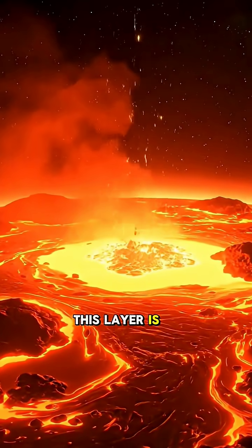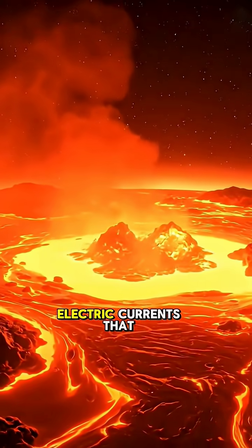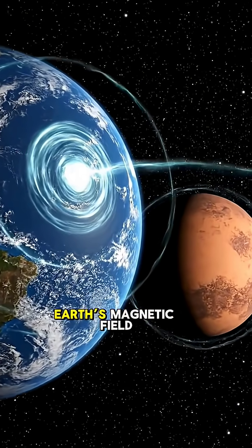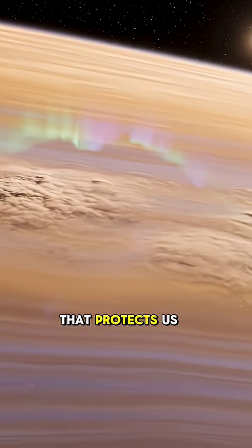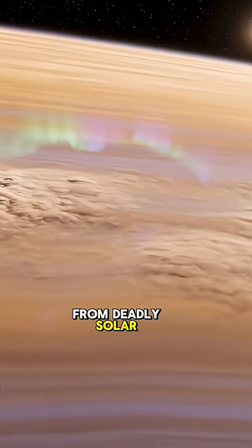This layer is always moving, creating electric currents that generate Earth's magnetic field, the invisible shield that protects us from deadly solar radiation.